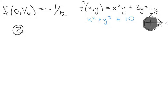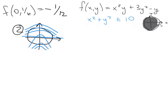We've finished finding interior local extrema and are now ready to analyze the boundary. Before jumping into the math, I plotted the contour plot using Wolfram Alpha to get a sense of the function's behavior, and we can already pick out by eye the places where the directional derivative along the boundary curve will be zero.